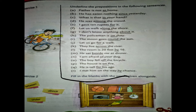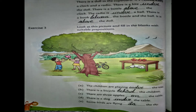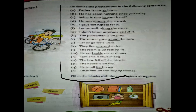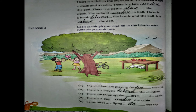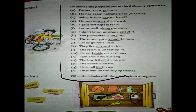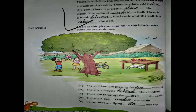Now come to Exercise 2: fill in the blanks using the words given, such as along, outside, above. Look at the picture and complete the paragraph. For example, 'There is a doll in the cupboard. It is between the clock and the radio' — since the doll is between the clock and the radio, we use 'between'. 'There is a kite under a doll' — since the kite is below the doll, we use 'under'. Complete Exercise 2 in the same way.